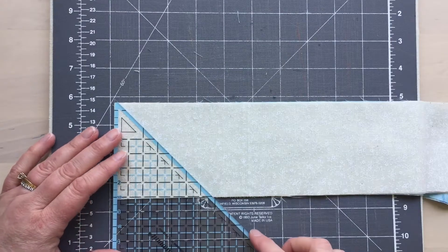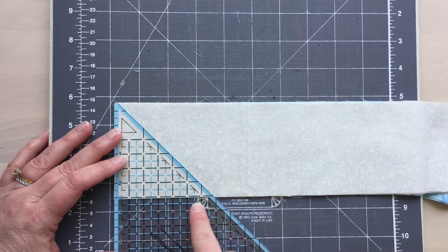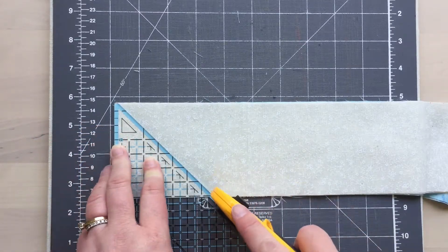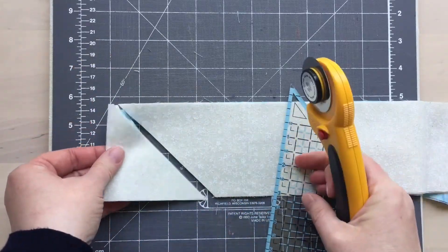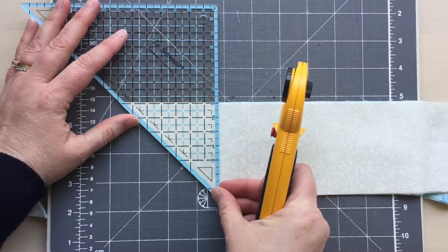Lay your two strips of fabrics right side together and align your ruler with the edge of the strips. Cut carefully making sure the ruler doesn't shift. Rotate the ruler to cut the perpendicular line.